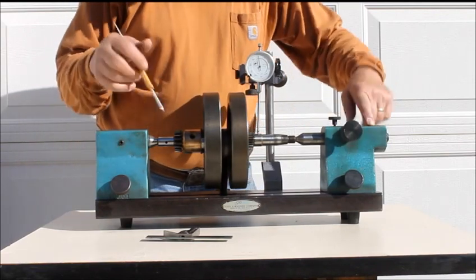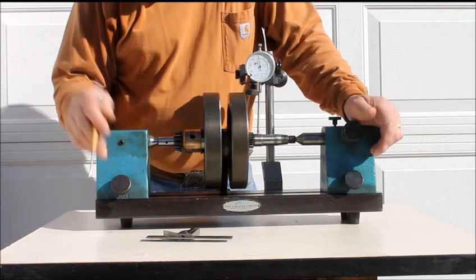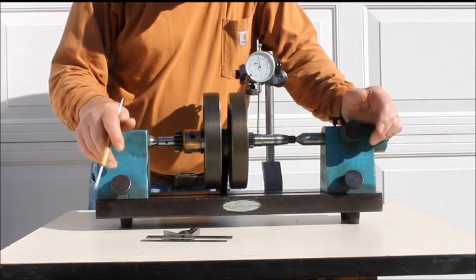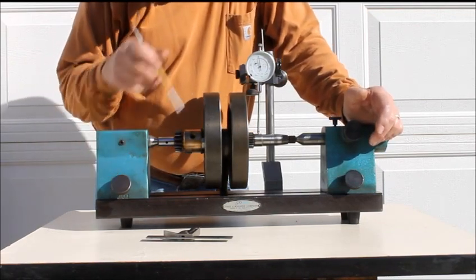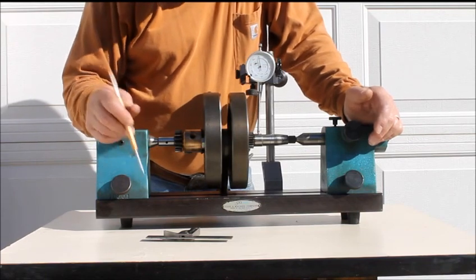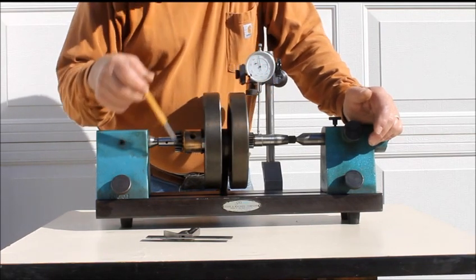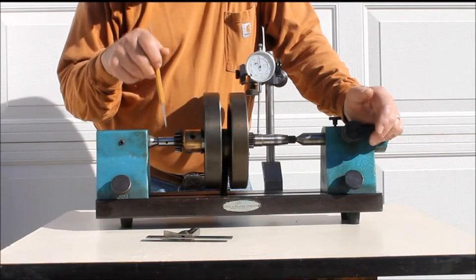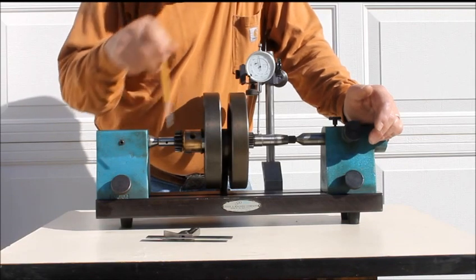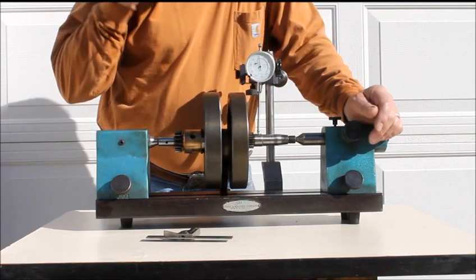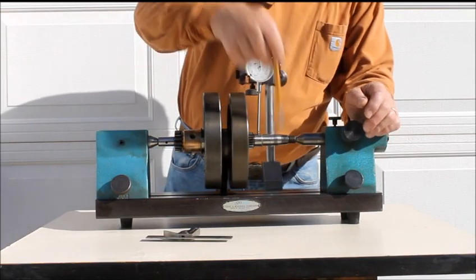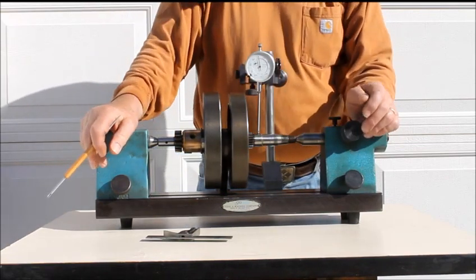This is known as a truing stand, dial indicator. We'll see how far out they are. The problem is when this shaft, the drive pinion shaft, doesn't coincide center line to center line with the timing pinion shaft.